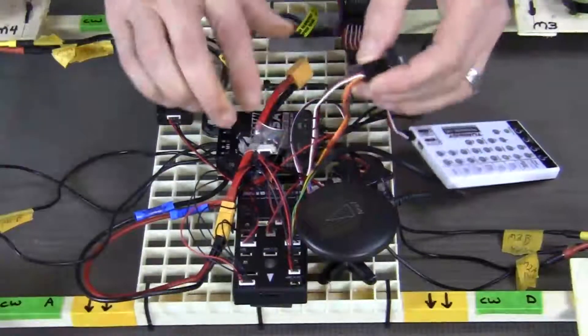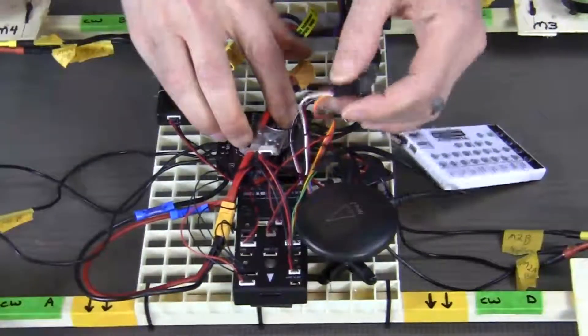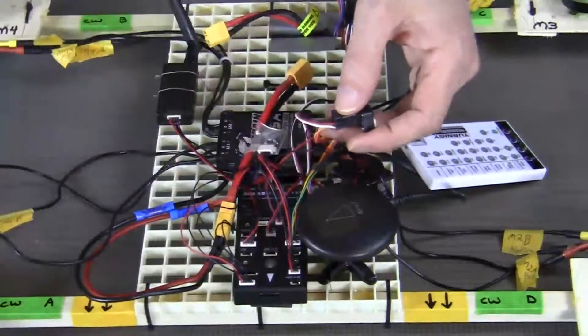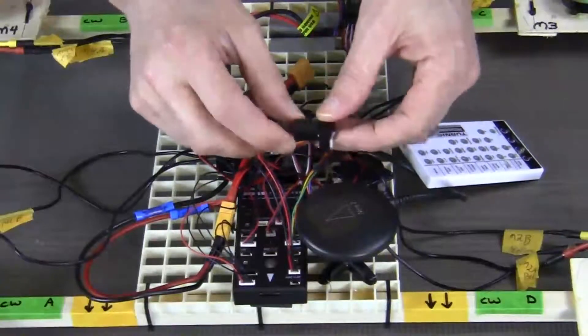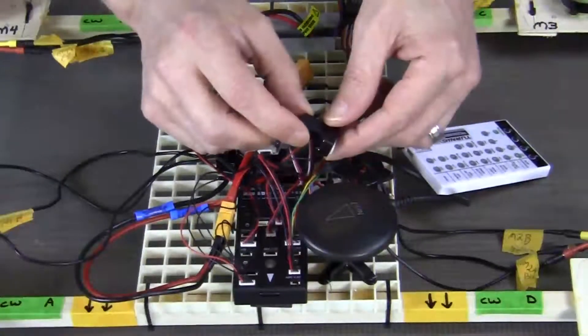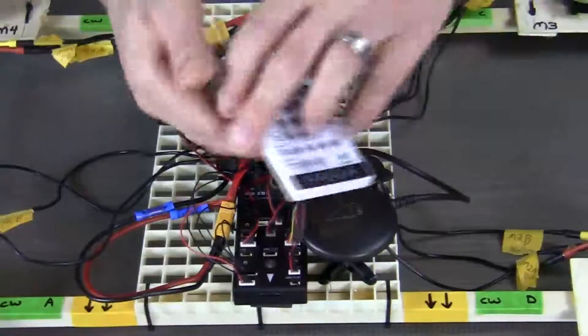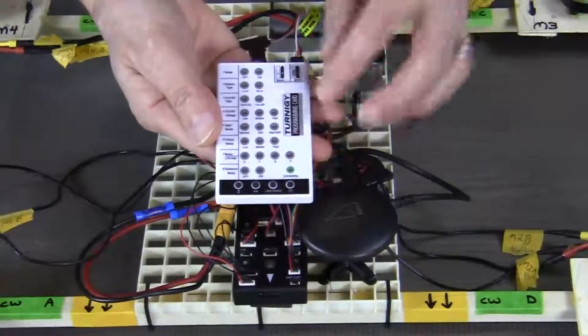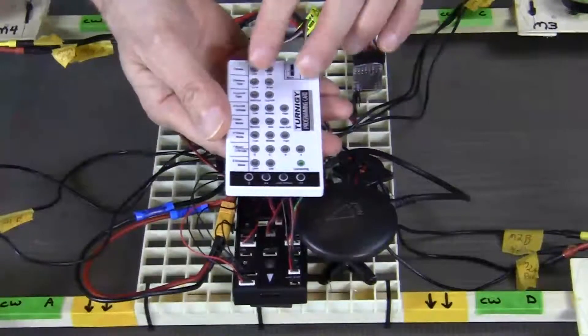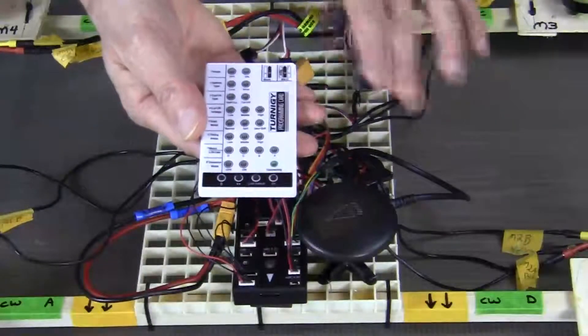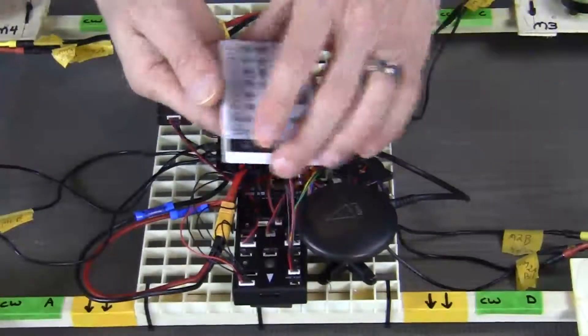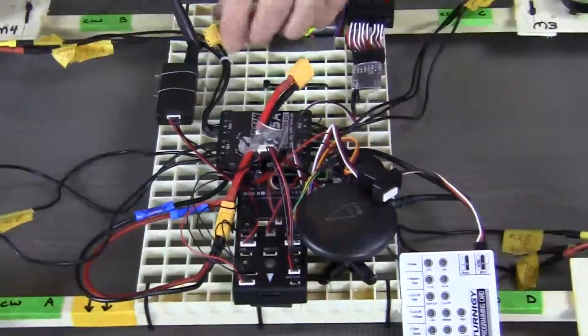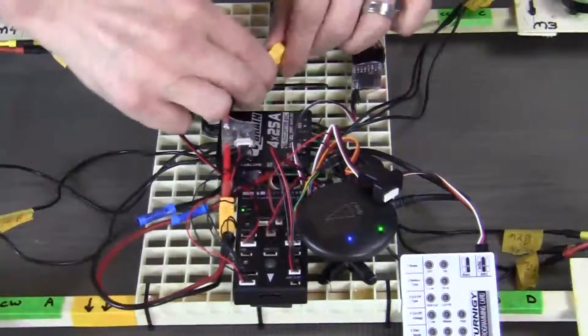So now what we have is all of the signal wires from the ESC that were originally connected to our PixHawk. We've taken them now and connected them to the TH hub that we connected to the Turnigy programming card. What this enables us to do is program all of the ESCs at once. Remember, it's a 4-in-1 ESC unit. With that done, we can go ahead and put power to the system.